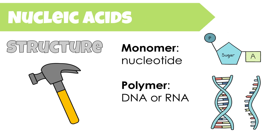The basic structure of all nucleic acids follows that monomer-polymer structure of the four macromolecules for life. The monomer is the building block or subunit that's repeated over and over again to build the larger polymer structure, which is our nucleic acid. The monomer that gets repeated is called a nucleotide. Nucleotides have a three-piece structure and get repeated to form the larger polymer, which is either the nucleic acid DNA or RNA.